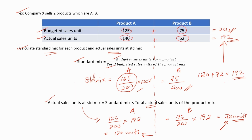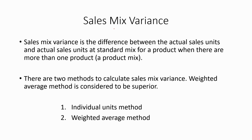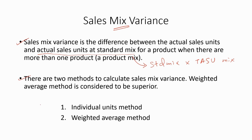In this case there are only two products. Now let's discuss the main topic. Sales mix variance is the difference between the actual sales units and actual sales units at standard mix for a product, when there is a product mix. There are two methods to calculate sales mix variance: the individual units method and the weighted average method. The weighted average method is considered to be superior.